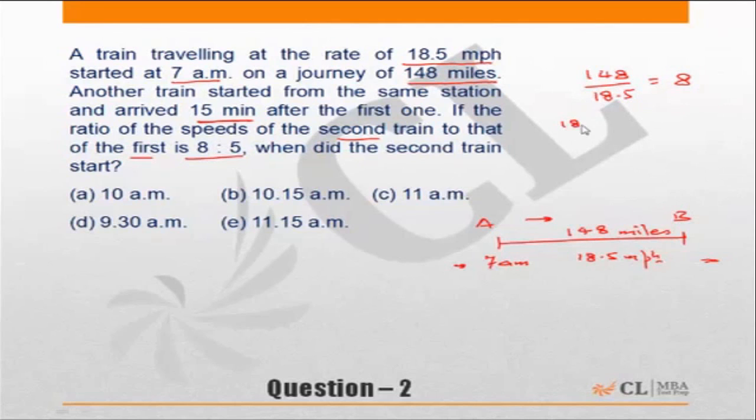37 into 2 is equal to 74, and 74 into 2 is equal to 148. So it is 2 into 2 into 2, which is 8. So this train will take 8 hours.